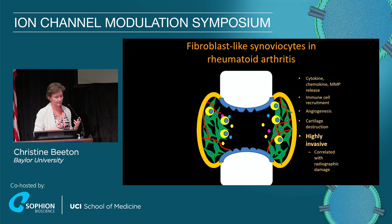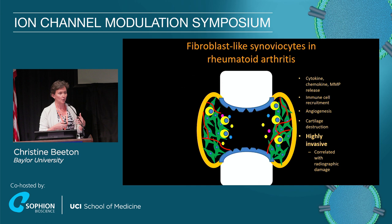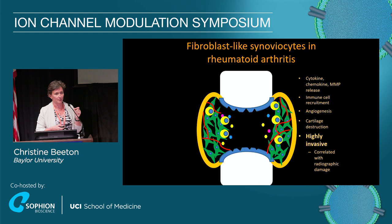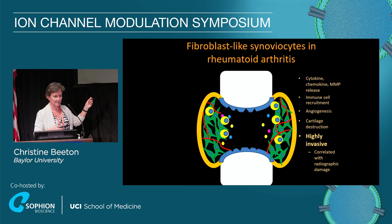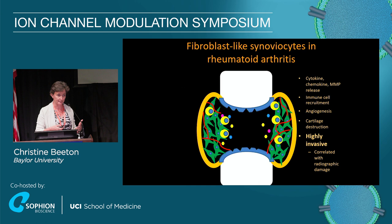Currently, all the drugs on the market to treat rheumatoid arthritis are either immunosuppressives that focus on the immune system, or broad inhibitors of proliferating cells like methotrexate — those are also going to affect FLS. But there is nothing specific for FLS. Very importantly, in animal models of rheumatoid arthritis, if you ablate the immune system, the FLS don't go back to rest. Something has changed in them. They become aggressive, can migrate from a diseased joint to a healthy one, and propagate disease. So we really need a good way to target FLS.